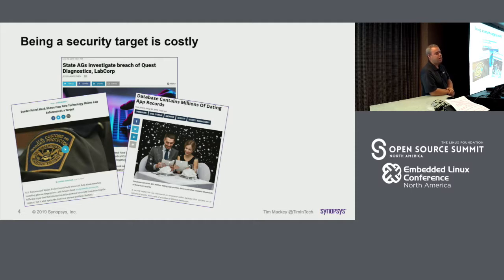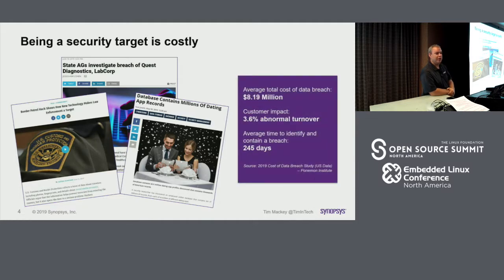Every year in July, IBM in conjunction with the Ponemon Institute puts out a report on the cost of data breaches. This year's 2018 data showed the average cost of a breach went up from $4.2 million to $8.19 million. Customer turnover went up dramatically. On the plus side, for the first time in four years we've gone down in the length of time to identify and contain a breach — now only 245 days, unless you're in healthcare, where it's 412.